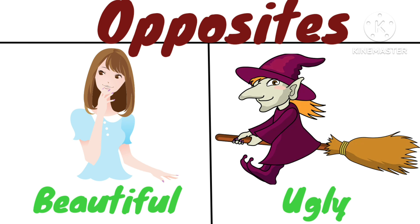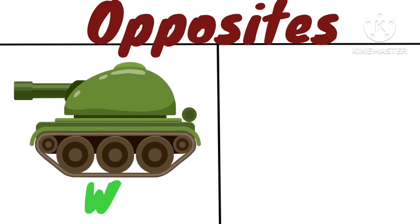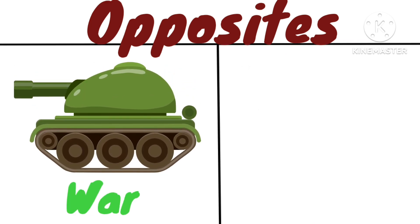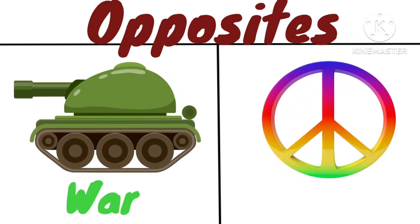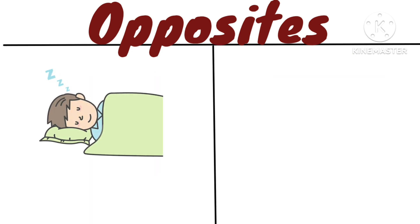Opposite of beautiful is ugly — beautiful girl, ugly witch. Opposite of war is peace. The two countries are at war, and we should maintain peace with each other.